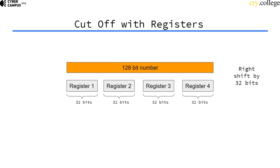So if I now do a right shift by 32 bits, and the 128-bit number is spread over four registers. How do I do that?